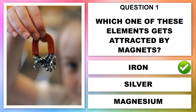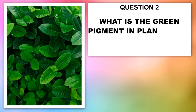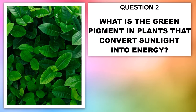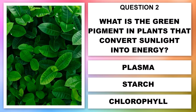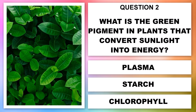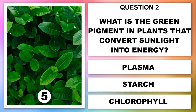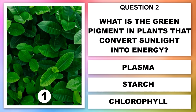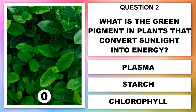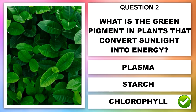Question 2. What is the green pigment in plants that converts sunlight into energy? Plasma, starch or chlorophyll? Chlorophyll.